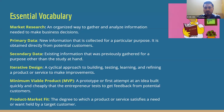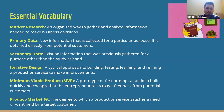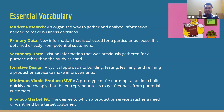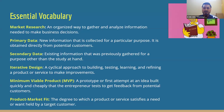We're also going to be talking about the MVP, which is a minimum viable product. This is a prototype or first attempt to build out an idea quickly and cheaply so that the entrepreneur gets a chance to test those products and get feedback from direct or potential customers.